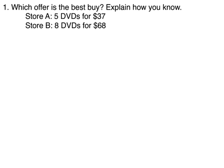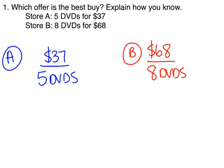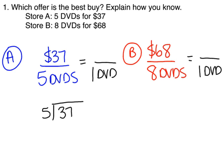Number one, which offers the best buy and how do you know? We have store A, which offers 5 DVDs for $37, and we have store B, which offers 8 DVDs for $68. For each of these, we need to calculate a unit rate, which means we're going to find the cost of 1 DVD. In order to do that, we're going to set up division problems: 37 divided by 5 and 68 divided by 8.